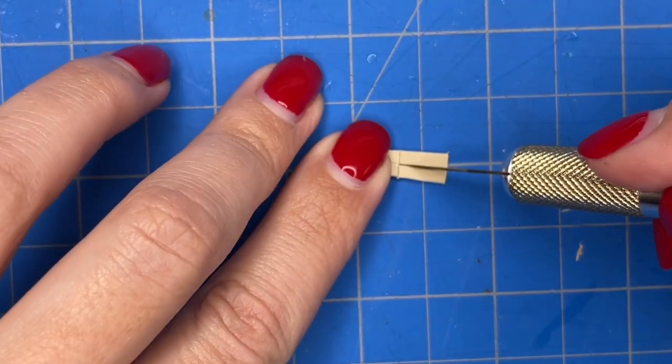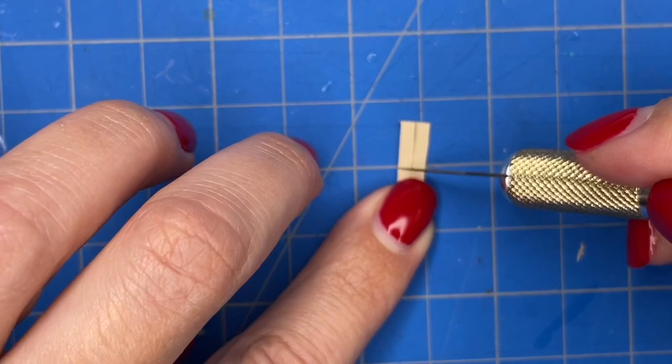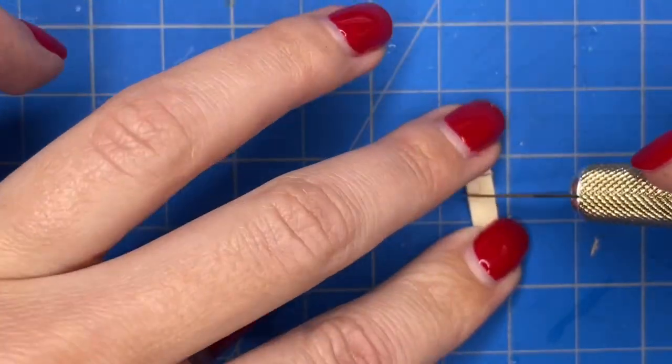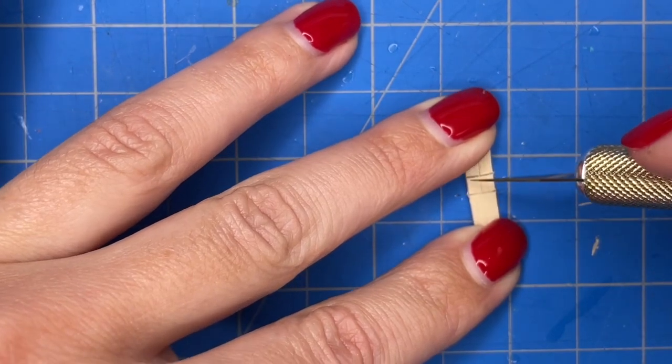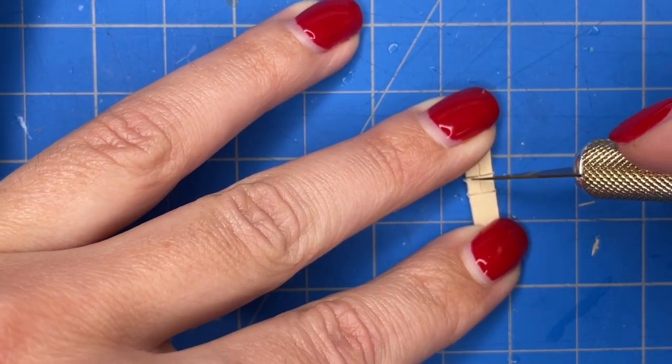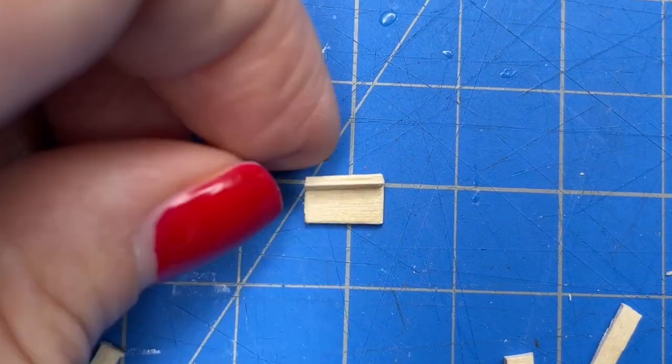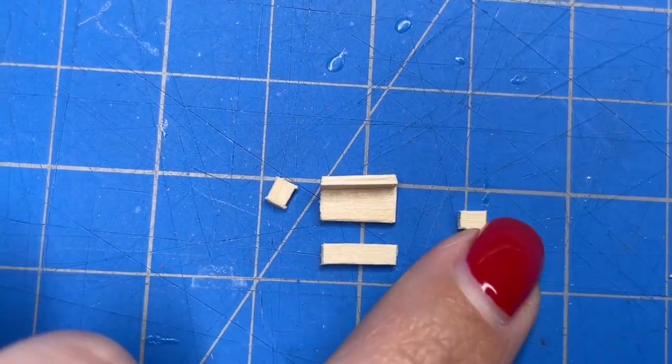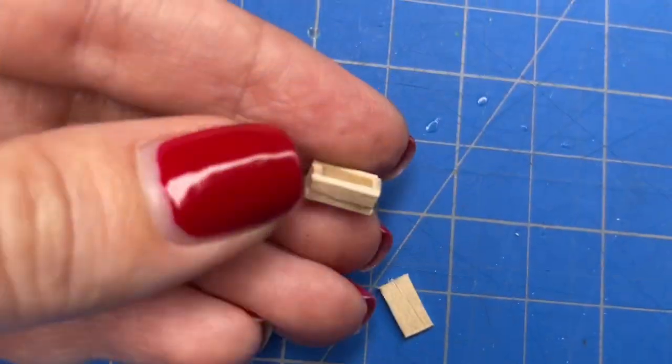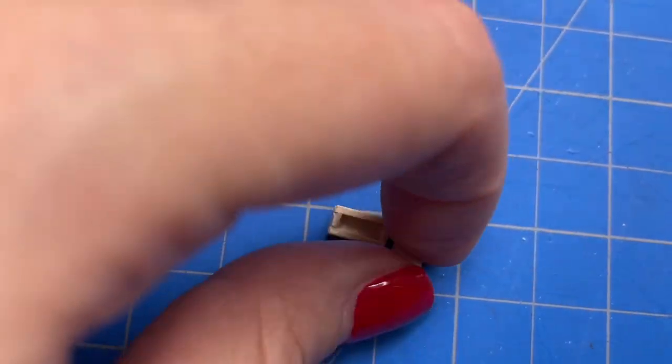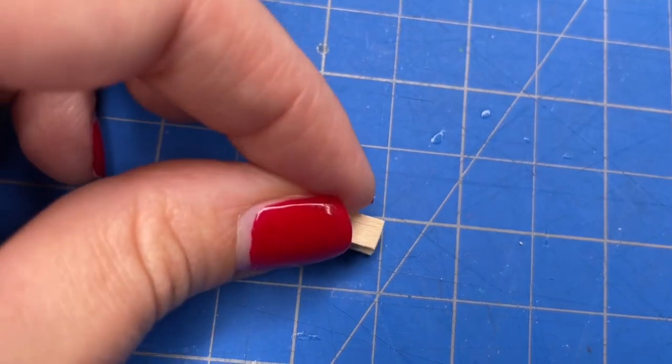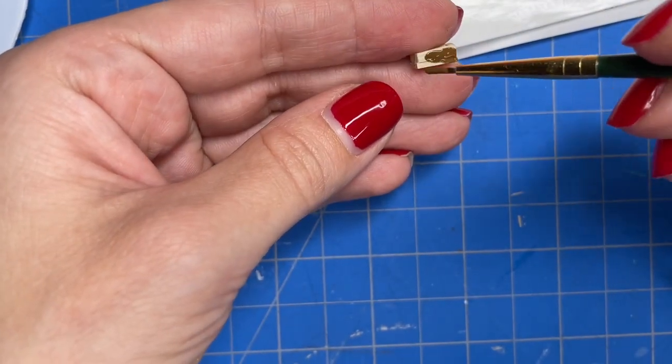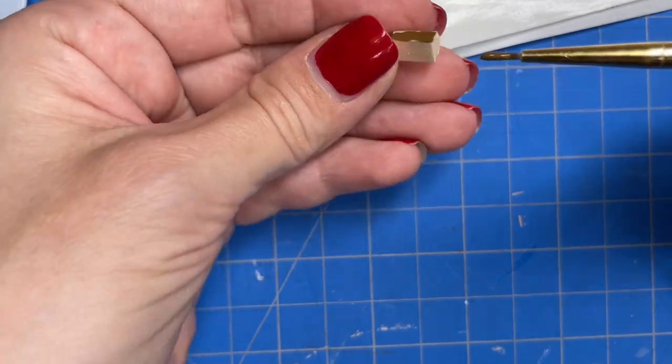Next I'll make the treasure chest because a castle is not complete without some jewels. So for that I grabbed a coffee stir and then started cutting it into much smaller pieces. I glued all of the pieces together using some wood glue. It now looks like a chest. I also cut off a small piece the same size to be a lid. Using some brown acrylic paint I painted the entire chest as well as the lid.